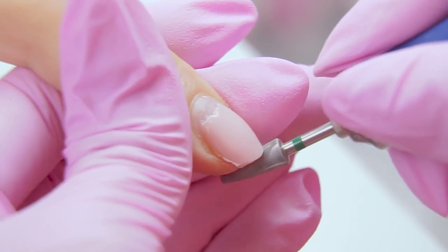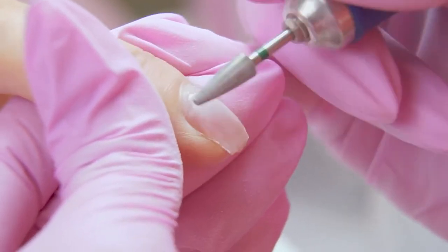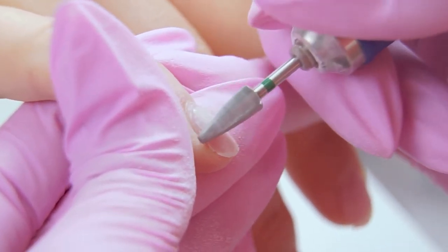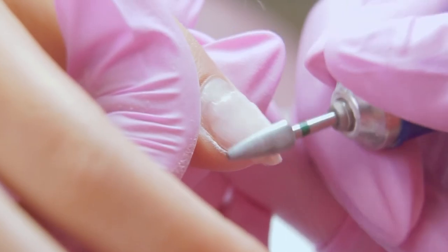I'm completely removing the lens of the free edge, removing the gel polish coating almost to the natural nail, leaving a thin layer, which I will later remove with the file.